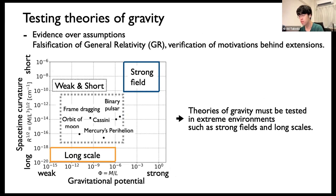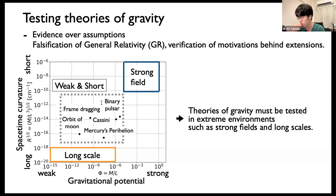GR is widely accepted as the standard theory of gravity in the standard cosmological model through experiments and observations in weak and short gravitational regions, as this figure shows — the regions where GR has been tested. However, GR has several unresolved issues such as dark matter, dark energy, and unification of quantum mechanics and gravity. Many alternative theories of gravity have been proposed to overcome such problems, so we must test theories of gravity in extreme environments such as strong fields and long scales.